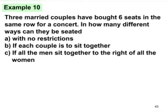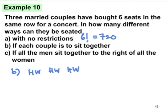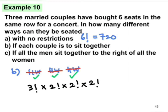Example ten: three married couples have bought six seats in the same row for a concert. With no restriction, we arrange six people — six factorial equals 720. If each couple must sit together, we have three couples (husband and wife as units). The answer for couples sitting together is 48.